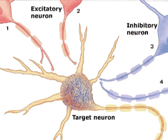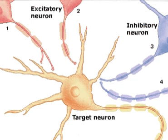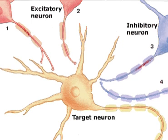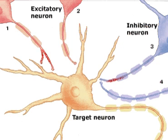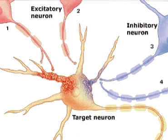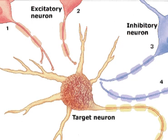Action potentials simultaneously arrive from excitatory neuron 1 and inhibitory neuron 3. The excitatory potential merges with the inhibitory potential, so that the membrane potential remains unchanged.